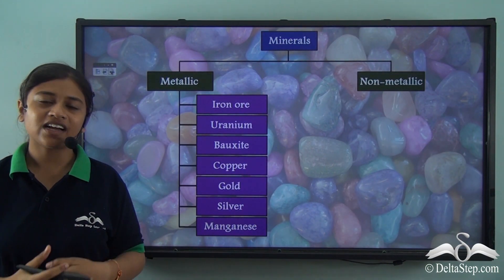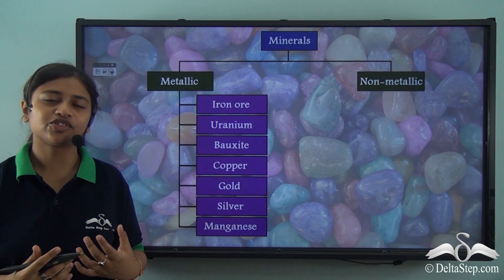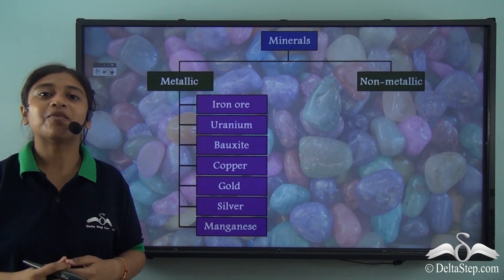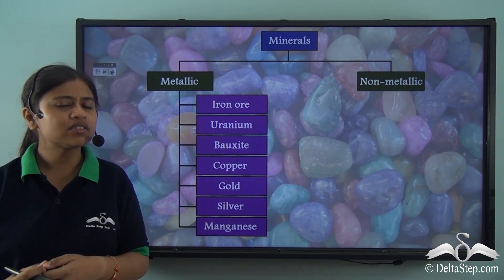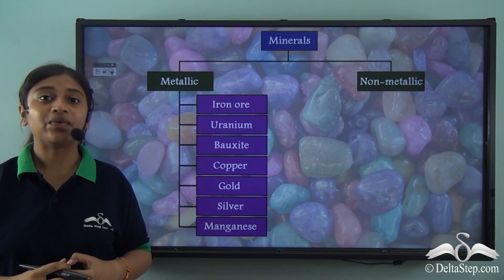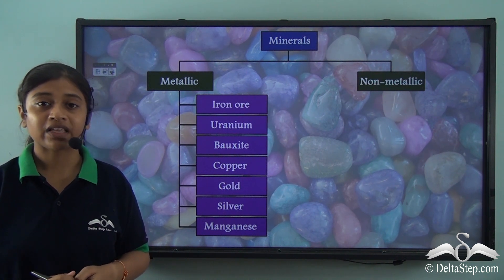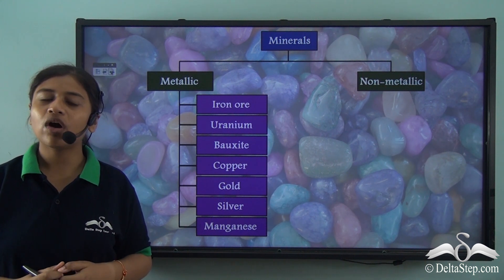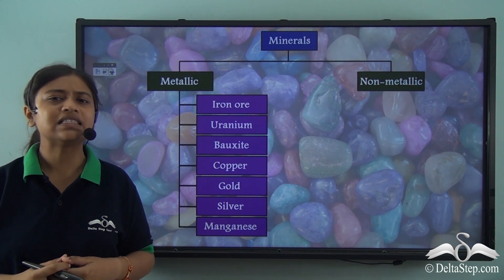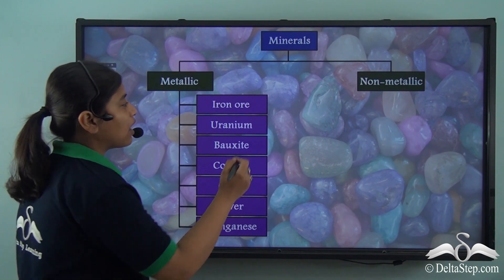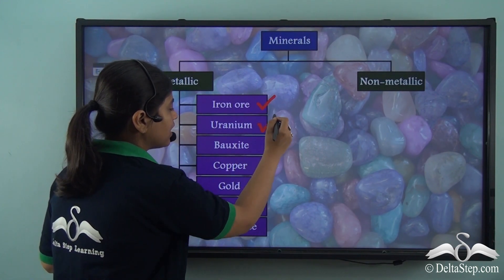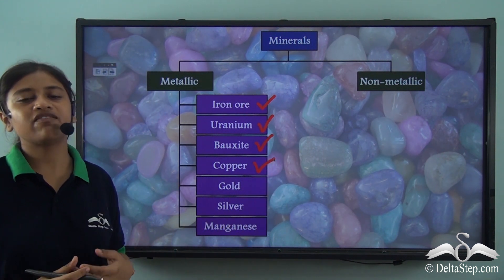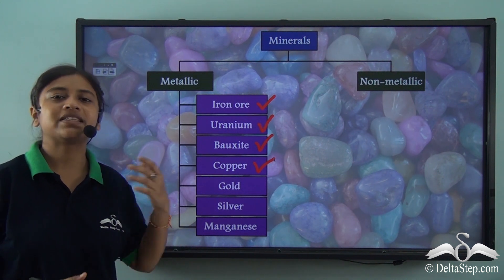Let us continue our discussion on the distribution of metallic and non-metallic minerals and their uses. In our previous lesson, we learnt about some important metallic minerals — how they are unevenly distributed and about some leading producers. We learnt about iron ore, uranium, bauxite and copper. Today we will continue with the rest of metallic minerals and then go on to non-metallic minerals.